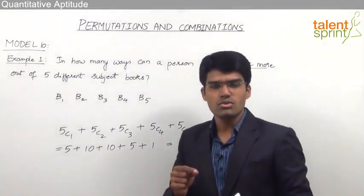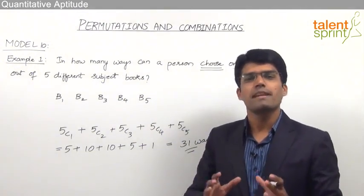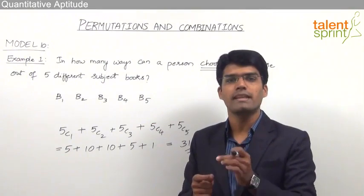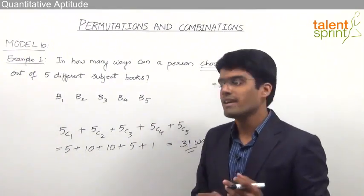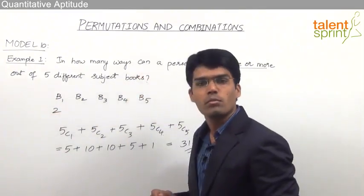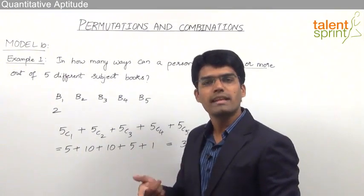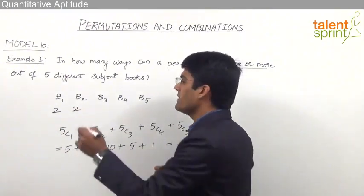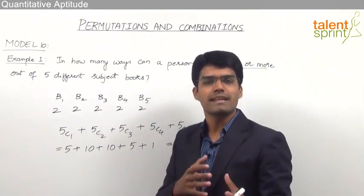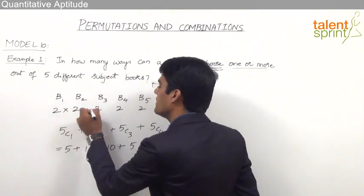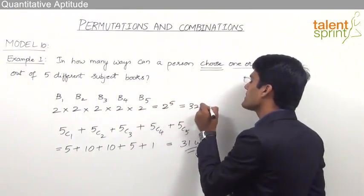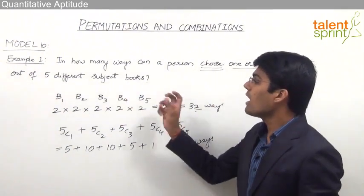A person has to choose one or more out of five different subject books. With each book, there are two possibilities: he can either take the book or leave it. So there are two choices for book one, two for book two, and so on for all five books. Altogether there are 2 × 2 × 2 × 2 × 2 = 2 power 5 = 32 ways in which books can be selected.